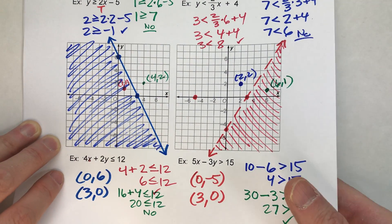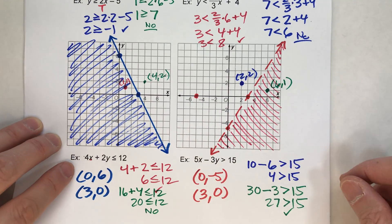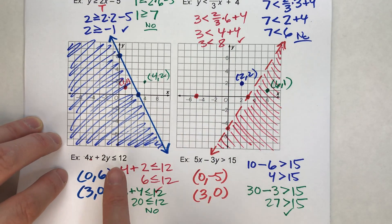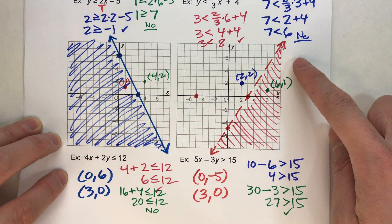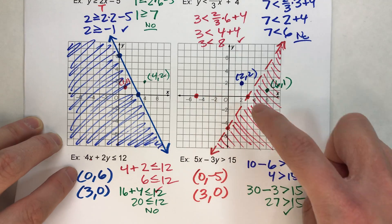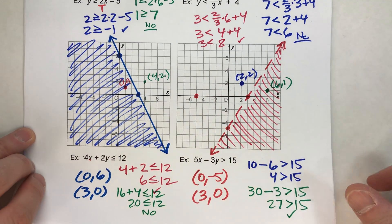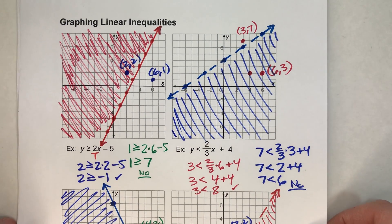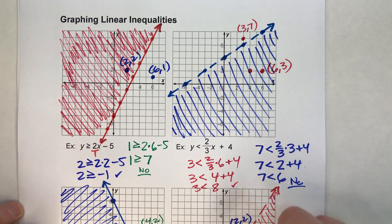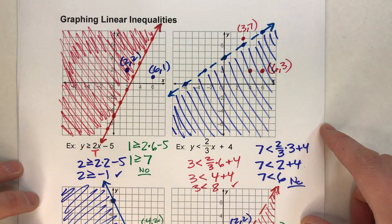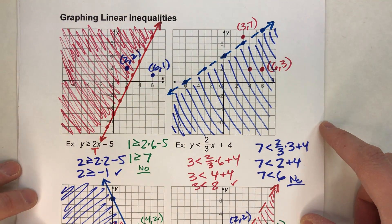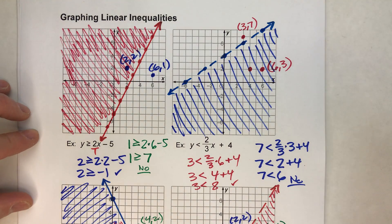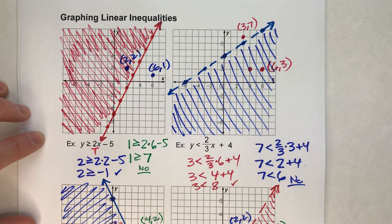So when you're graphing inequalities, first draw in the boundary line, paying attention to whether it's solid or dashed. Then check a point on each side to figure out which side you need to shade in. Sometimes it's above, sometimes it's below, but you can't always trust the symbol to tell you which way to go. Hopefully you found this video helpful. If you did, please hit that like button and subscribe because it really helps us out. Good luck on your math and I will see you next time.